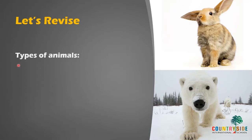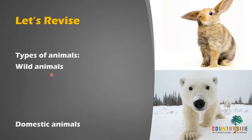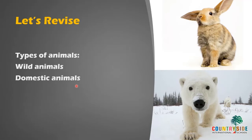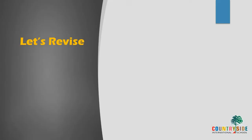We studied about the types of animals. Wild animals — animals that live in forests and are harmful — are called wild animals. Domestic animals are animals which are useful to us and we keep them in our houses. They are called domestic animals.